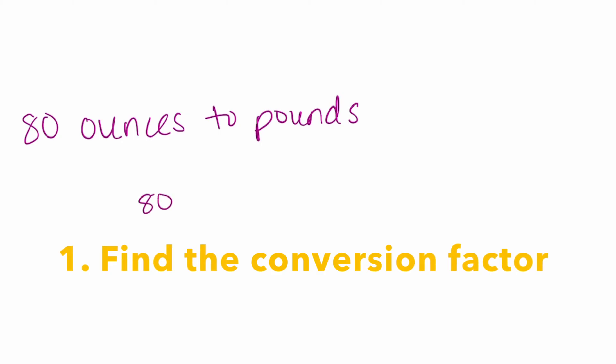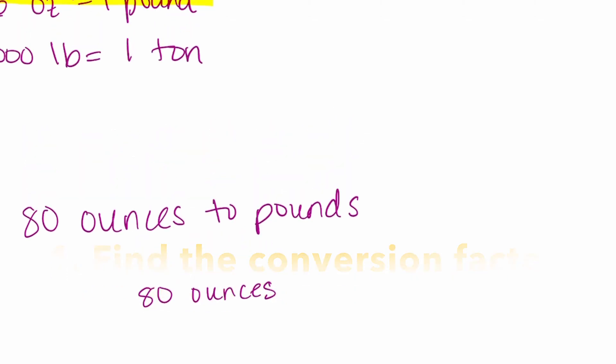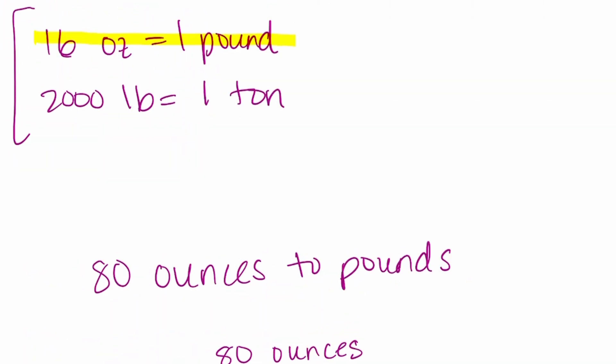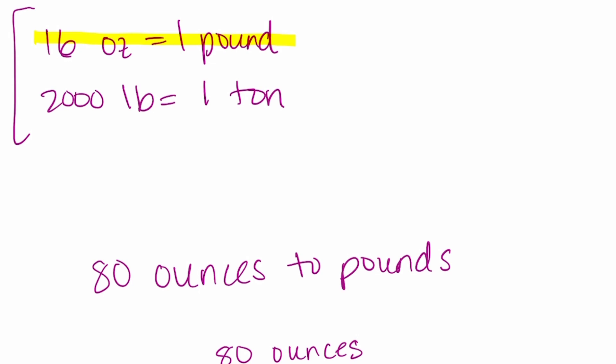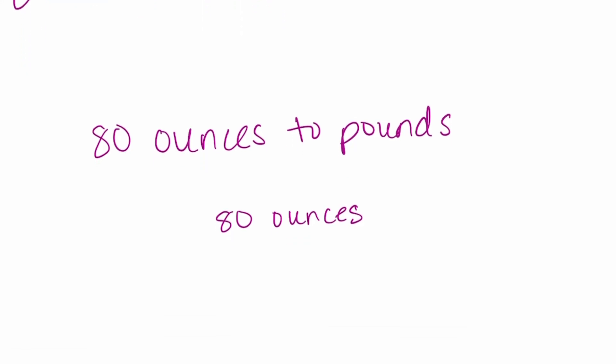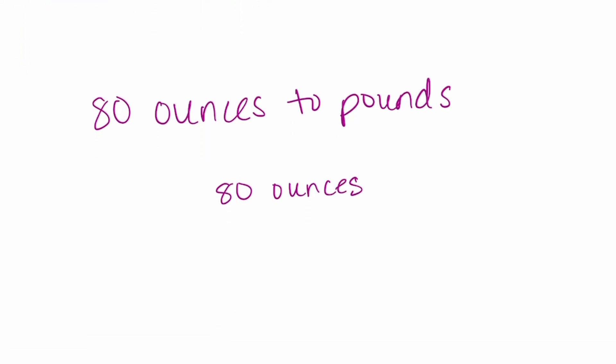So now we want to think about what is the conversion unit that we know that we can use to convert this problem. And it's important to remember here, when we're working with conversions, we are not wanting to change the 80 ounces in terms of value. We want to find what is the same value, but just change the name or the unit of measurement to pounds. So the way that we'll do that is by using one of our conversion factors. So let's look up here. You see here where it's highlighted. 16 ounces equals one pound is the conversion unit that we're going to be using, the equivalent measurement that we'll use.